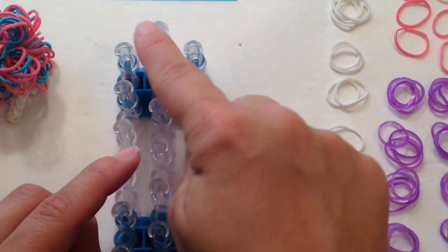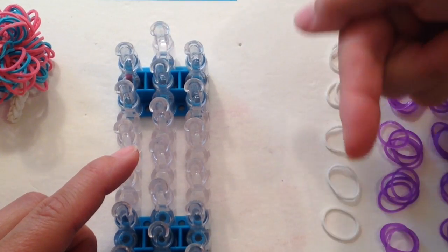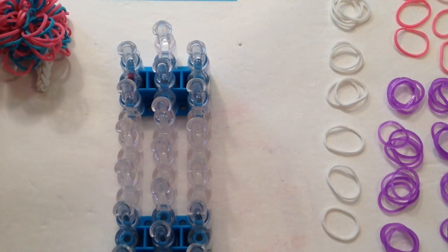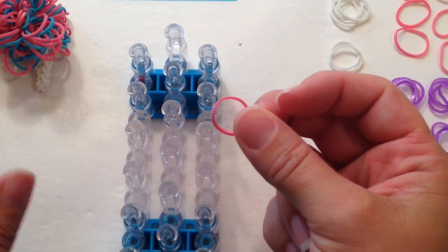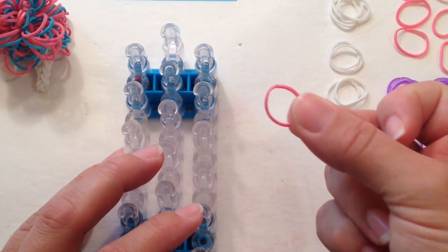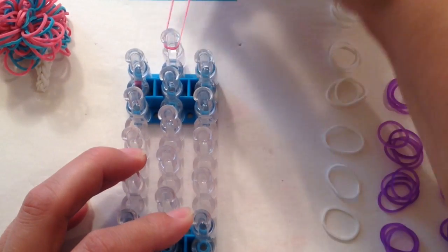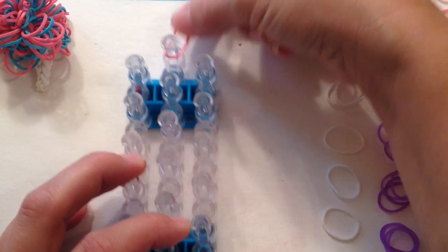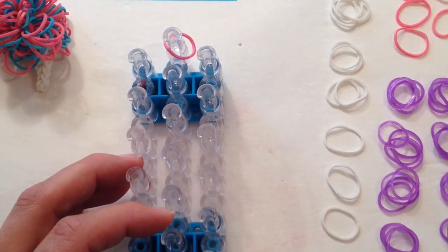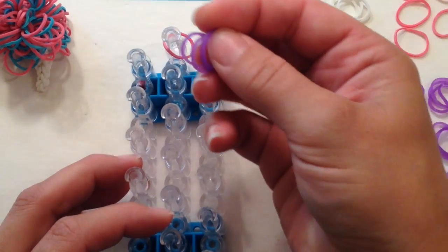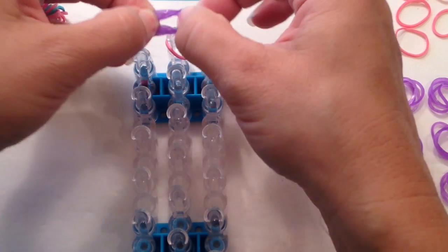Our loom is going to be set in the offset configuration, with the arrows pointing towards our body, and we're going to begin. To begin, I'd like for you to take one of your bands that you're using for the inside color. Today I'm using pink, just so it shows up better on video, and let it dangle over your center peg right here. You want to take an additional 4 bands, 4 of your purple bands, and you want to lay it on that center peg also.